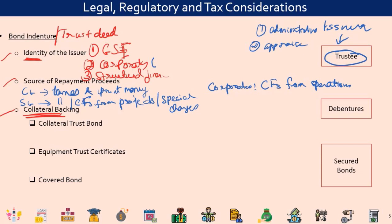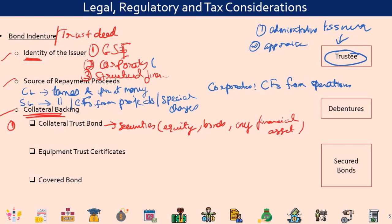There are three types of collateral typically offered. First is a collateral trust bond — these are secured by securities such as equity, other bonds, or any financial asset essentially. This is a very common way of providing collateral. For example, promoters of publicly listed companies, when raising money, pledge their own shares — their stake in the company. If a promoter owns 25 percent of a company and issues bonds, they may provide those 25 percent of shares as collateral.